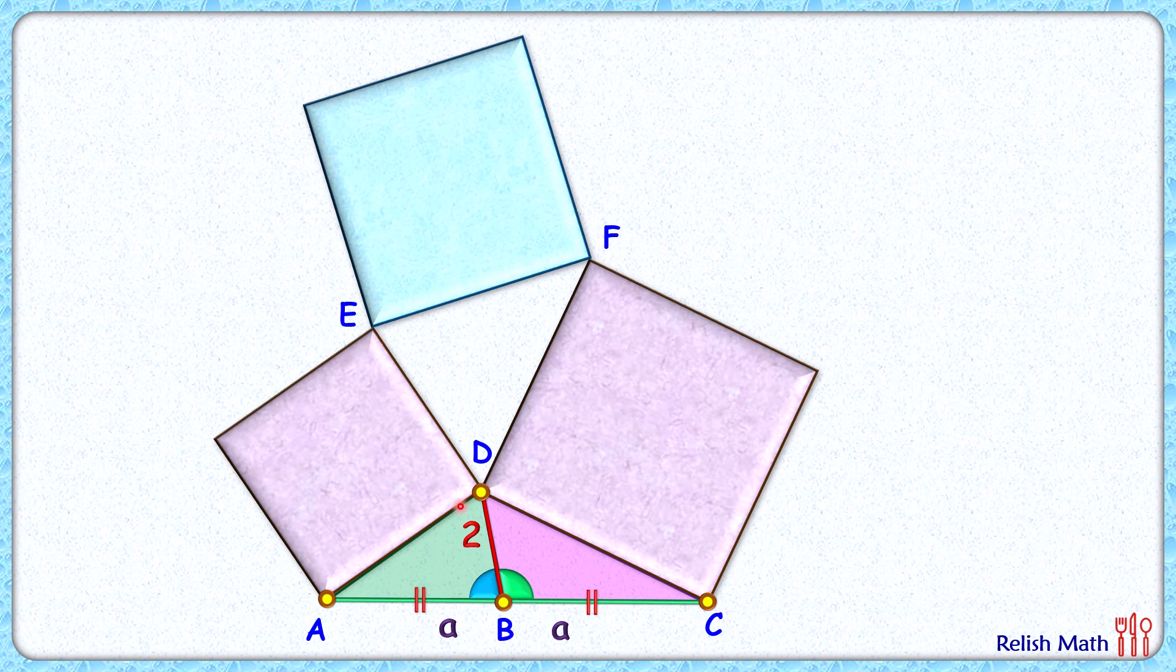So with point D as an axis, let's rotate this green triangle by 90 degrees such that point A will coincide with point E here. So here BD length, that same as 2 centimeters.